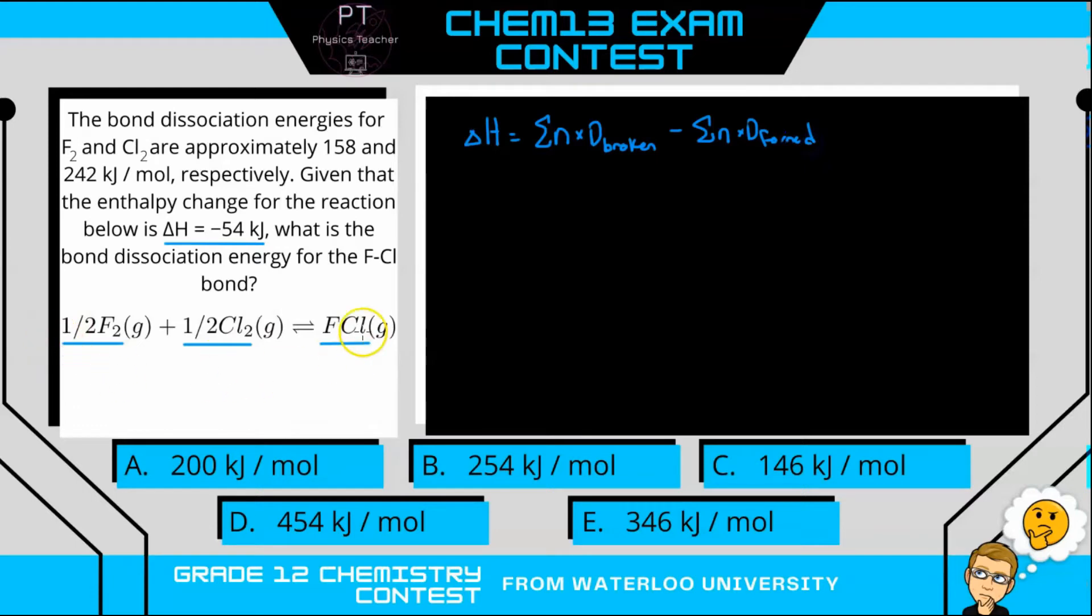So in the case of this reaction, our enthalpy change is minus 54 kJ, so it's negative, so we have an exothermic reaction. And for our reactants, we'll start with fluorine, so we have one half mole multiplied by its dissociation energy, which is 158 kJ per mole.